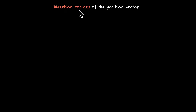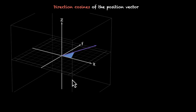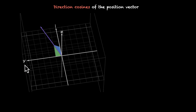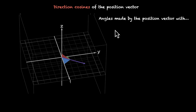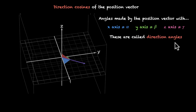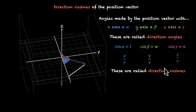Now let's look at direction cosines of the position vector. As the name suggests, we'll be taking cosines of some angles, so angles are involved. We measure the angles that this vector makes with the positive x, y, and z axes. The blue angle is what this position vector makes with the positive x-axis, the green angle with the y-axis, and the red angle with the z-axis. If the angle with the x-axis is alpha, y-axis is beta, and z-axis is gamma, these are called direction angles, and the cosines of these angles are called direction cosines.